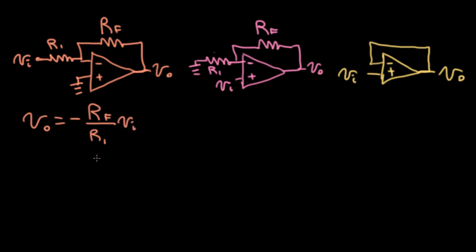So this is a circuit with an inverting gain of RF over R1. Then the output of this middle circuit is going to be 1 plus RF over R1 times VI. So this has a non-inverting gain of 1 plus RF over R1.